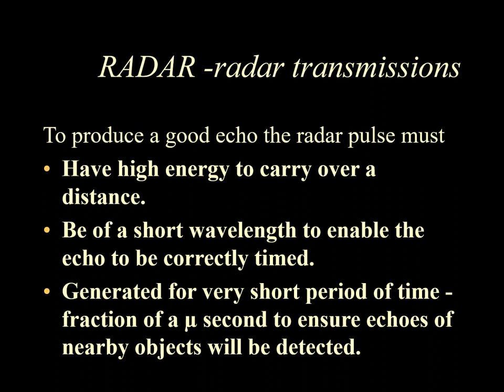In terms of radar transmission, going back to the echo ranging principle discussed in the first video, the radar pulse must have very high energy to carry it over a reasonable distance. With low energy waves, the energy will be dissipated and the wave will die before it hits the target. The radar pulse must also be of a short wavelength to enable the echo to be timed accurately, and it is generated for only very short periods — fractions of a microsecond — to ensure echoes of nearby objects are received properly.